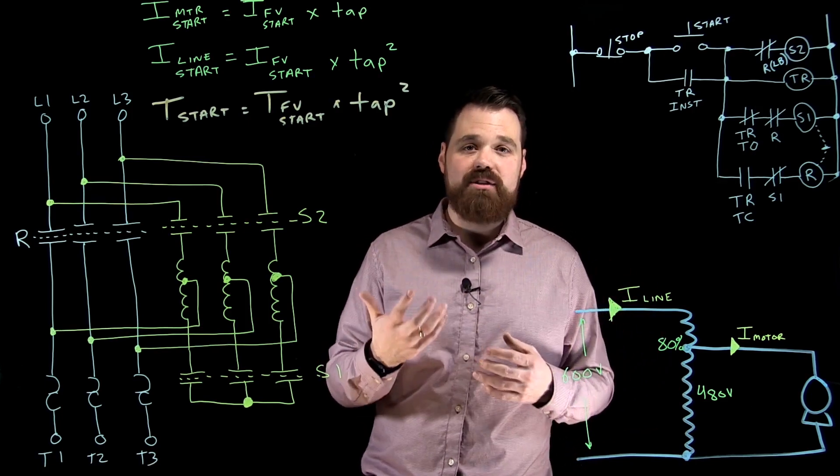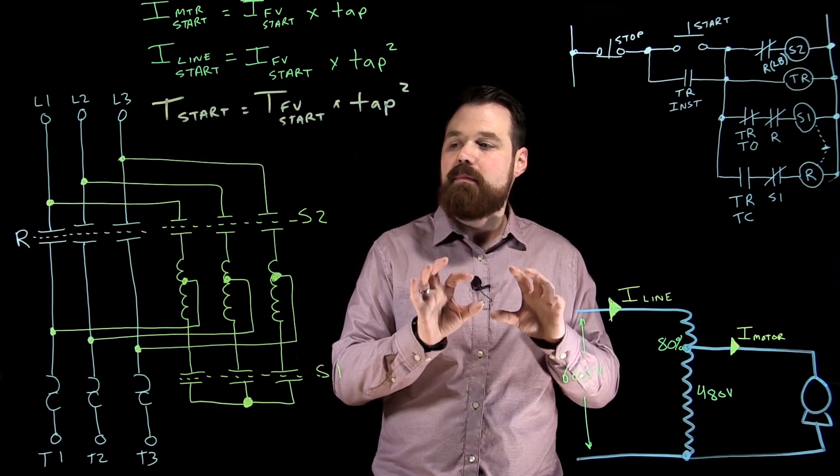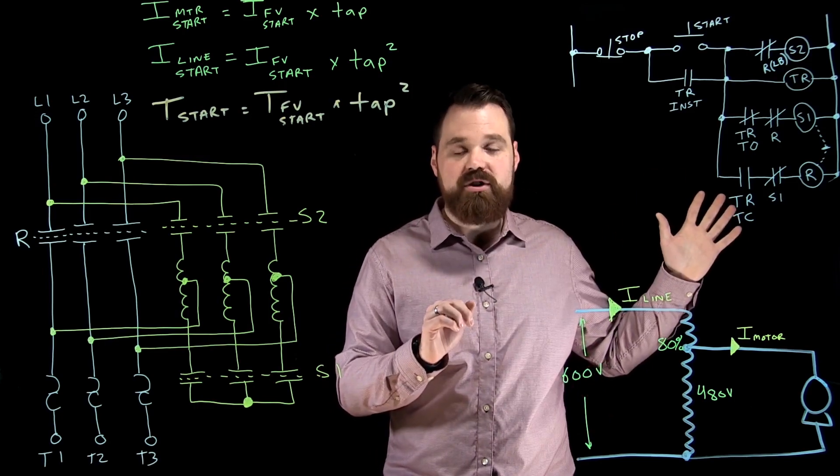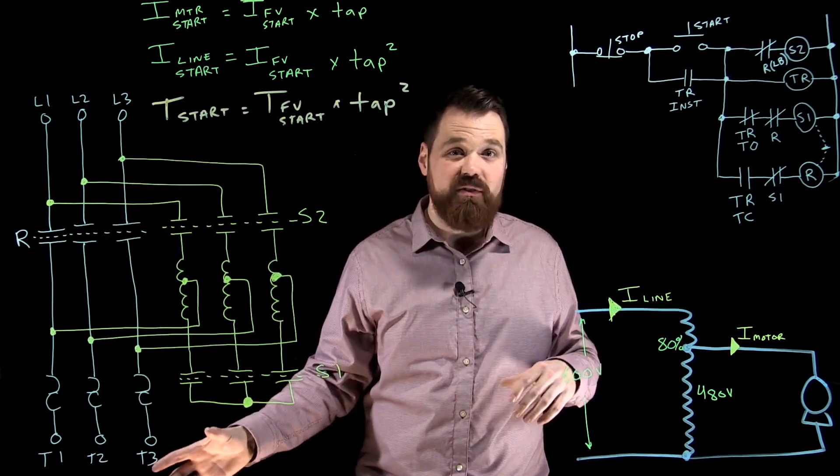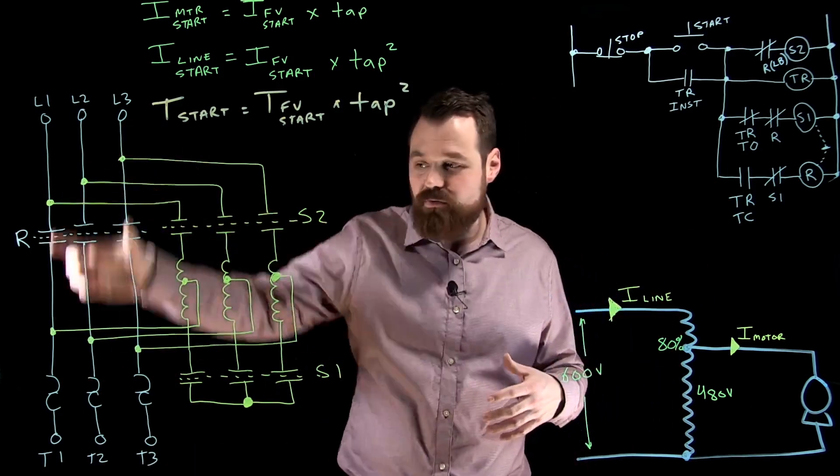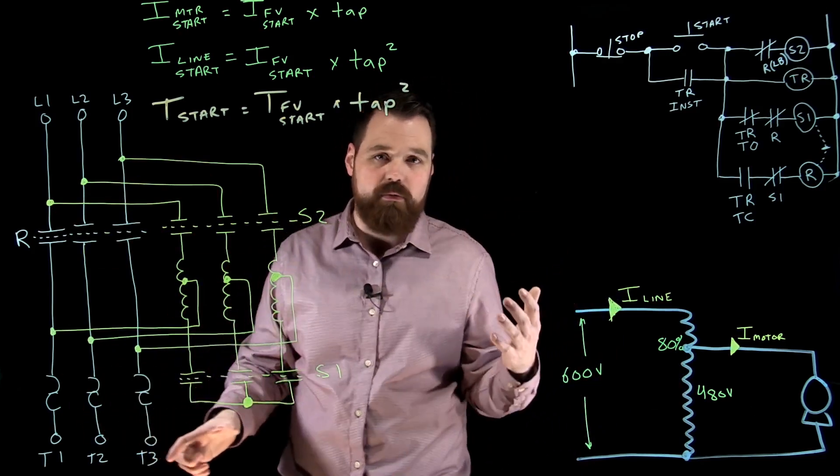There's one called open transition and one called closed transition. With an open transition, we can get some torque bumps and current spikes. An open transition completely removes itself from the circuit in autotransformer start, then starts running full voltage. A closed transition starts running full voltage and then completely removes the autotransformer from the circuit.